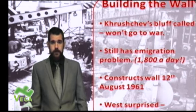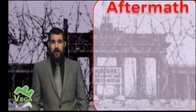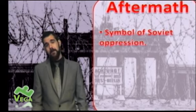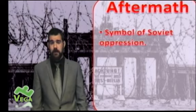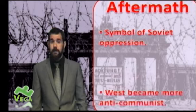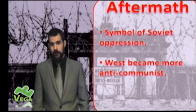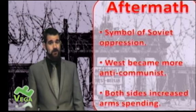The wall is initially a propaganda success for the Soviet Union because the West are caught completely off guard — they never saw it coming, and it looks like Khrushchev got one up on the Americans. But in the aftermath, the opposite begins to happen. The wall becomes a very visible reminder of Soviet oppression — a symbol that they need to keep their own people in. It makes the West more anti-communist and reinforces the image of a tyrannical, oppressive state. Both sides increase their arms spending as a direct result of the Berlin Wall crisis.